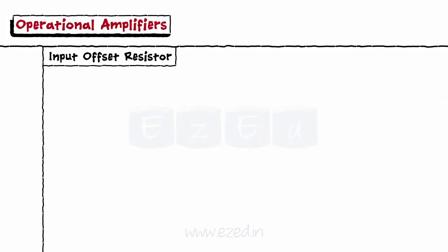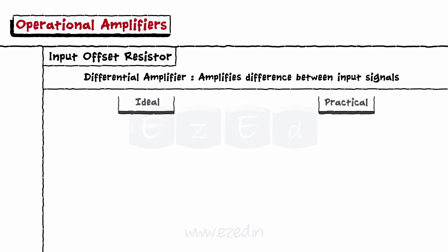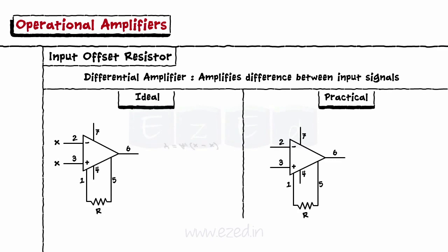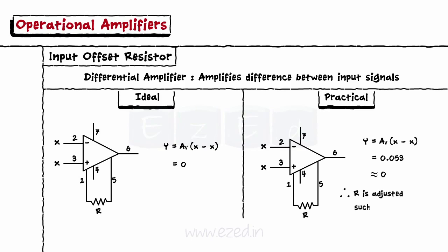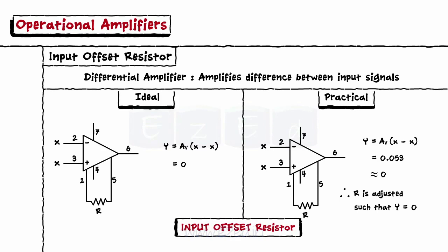An op-amp is also called a differential amplifier because it amplifies the difference between the input signals. Ideally, when both inputs are the same, the output should be zero. But practically, there exists a non-zero output. We adjust resistor R such that when the same inputs are applied, the output will be zero. Hence, it is called an input offset resistor.